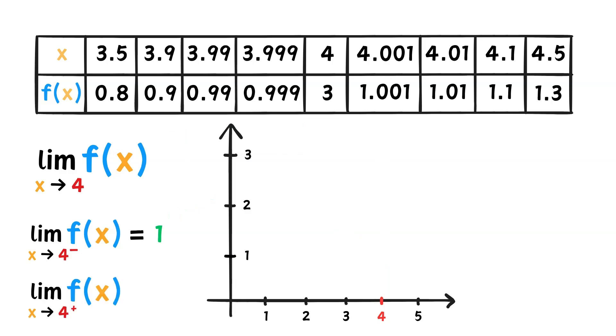So we found that the limit of f of x as x approaches 4 from the left is 1. What about from the right? Well, plotting the points given on the right, or the numbers greater than 4, we see that as the distance between 4 and the x value gets smaller and smaller, f of x is getting closer and closer to 1. So we can conclude that the limit from the right is 1 as well. And look at that. The two one-sided limits exist and are equal, so we know that the limit of f of x as x approaches 4 is 1.